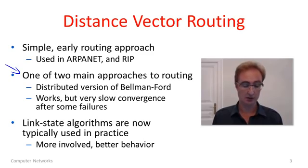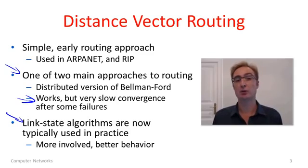but it does suffer from very slow convergence behavior after some kinds of link failures. And for that reason, the kind of algorithms which we use to compute routes in most real networks today are often link state algorithms, which we'll see in a little while. These algorithms are a little more involved in terms of the work they do, but result in better overall behavior.